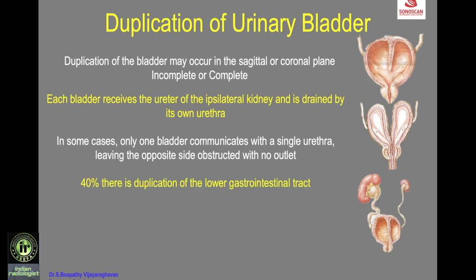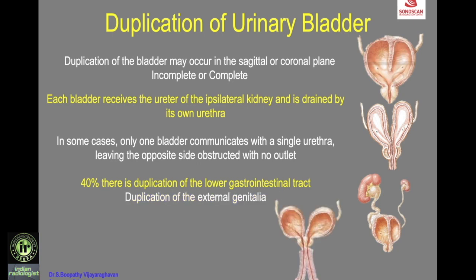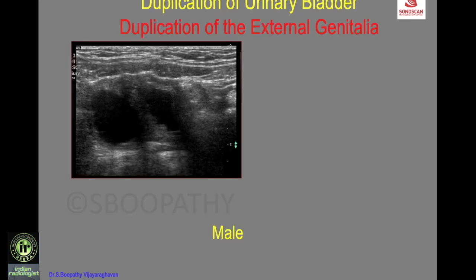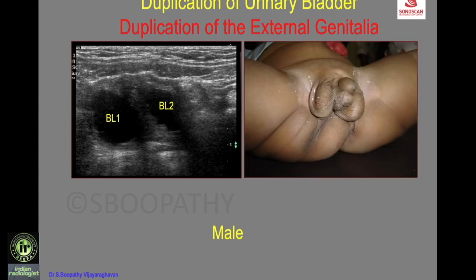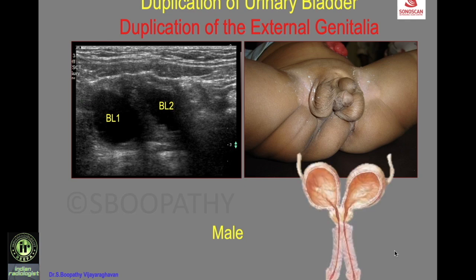When there is duplication of the bladder, in about 40 percent of cases there is also duplication of the lower gastrointestinal tract or external genitalia. A transverse scan shows two urinary bladders — complete duplication — and clinically there is complete duplication of the external genitalia in a male.